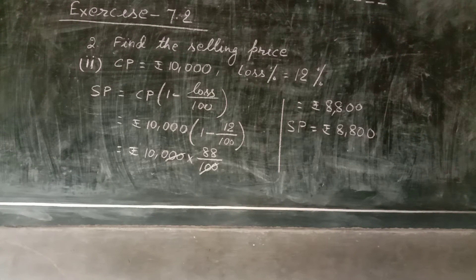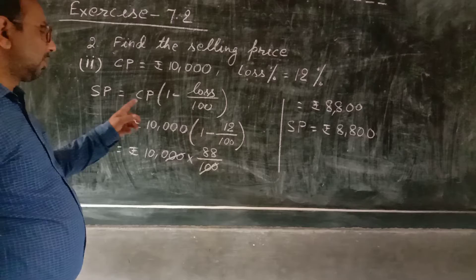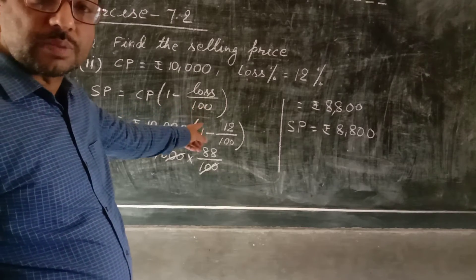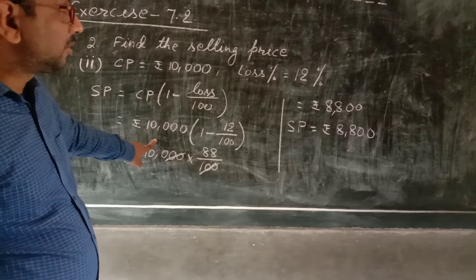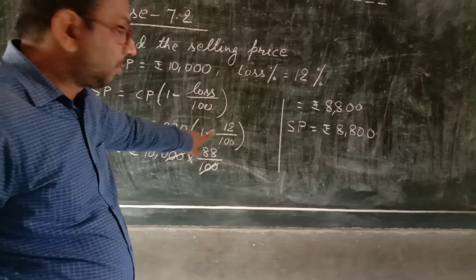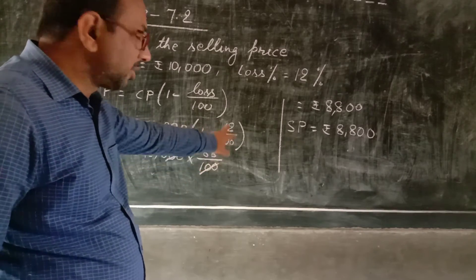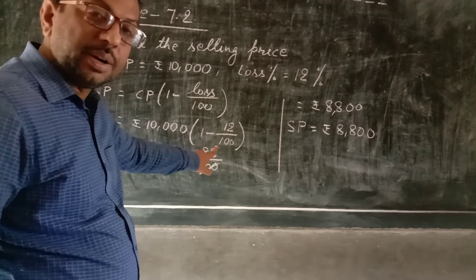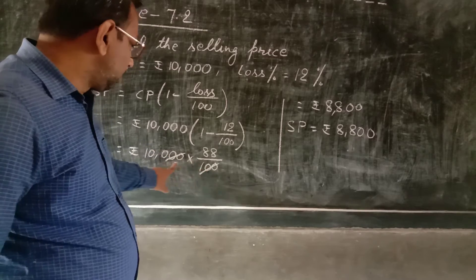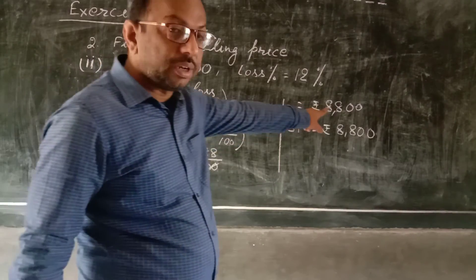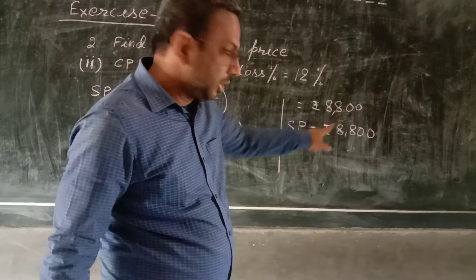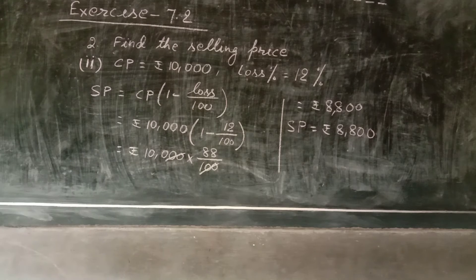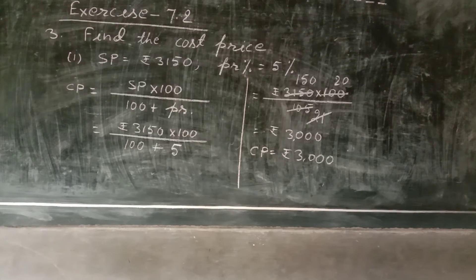Question number 2, roman number two: find the selling price when CP and loss are given. Using SP equals CP into (1 minus loss by 100), with CP = 10,000 and loss = 12%, we get 10,000 into 88 by 100. The zeros cancel, giving 100 into 88 equals 8800. So SP becomes Rs. 8,800.